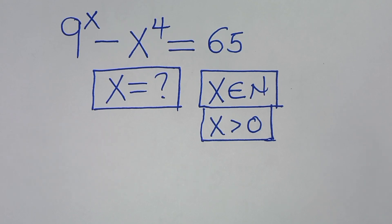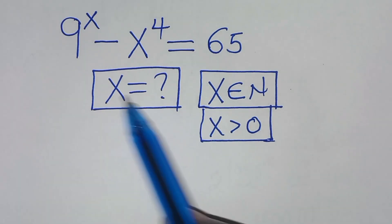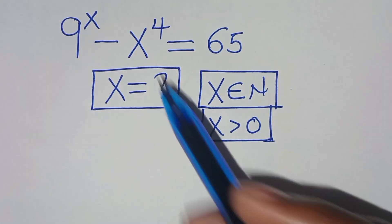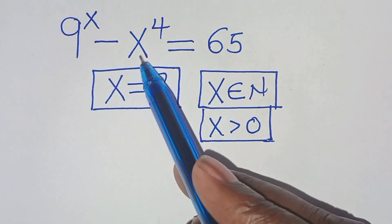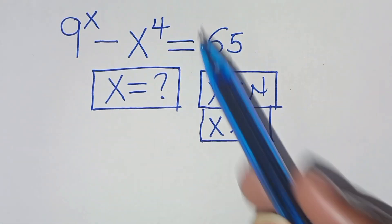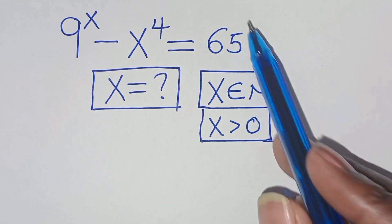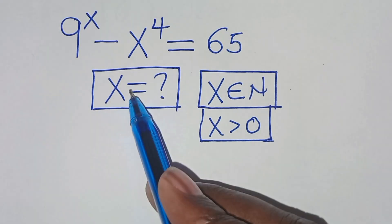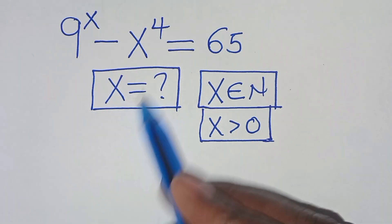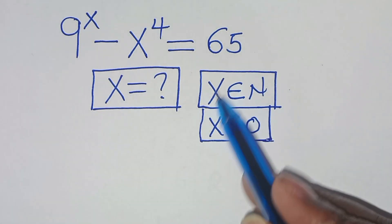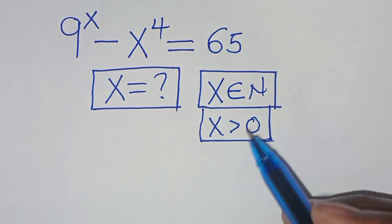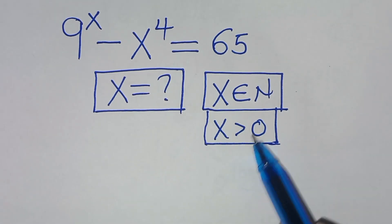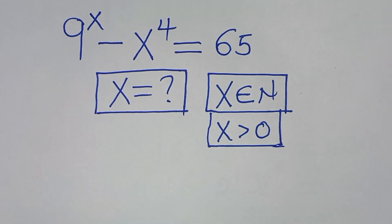Hello everyone, you are welcome to solve this nice algebra problem, which is 9 to the power of x minus x to the power of 4, this is equal to 65. So what is the value of x from here, given that x is a member of natural numbers and that x is greater than 0.